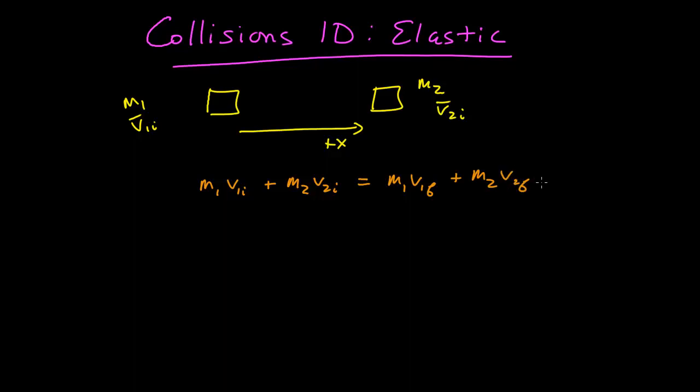That's just momentum conservation. Our initial momentum, mv of both objects, is equal to our final momentum, mass times velocity of both objects.